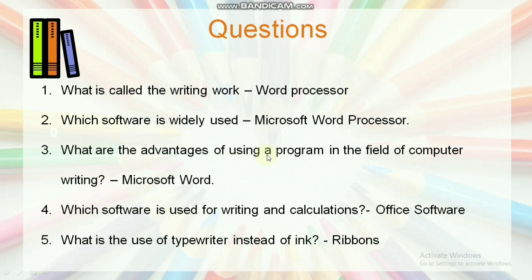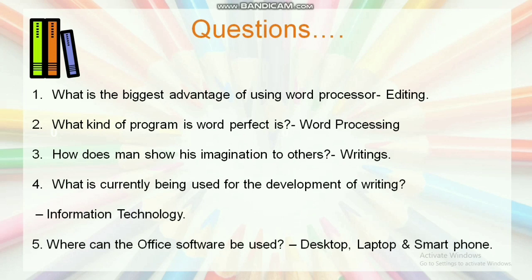What are the advantages of using a program in the field of computer writing? The answer is Microsoft Word. Which software is used for writing and calculations? The answer is office software, Microsoft word processor. What is used in a typewriter instead of ink? The answer is ribbon. What is the biggest advantage of using word processor? The answer is editing. What kind of program is WordPerfect? It is word processing. How does a man show his imagination to others? Writing. What is currently being used for the development of writing? Information technology. Where can the office software be used? Desktop, laptop, and smartphone.